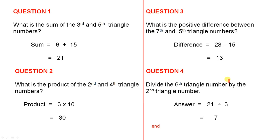Divide the sixth triangle number by the second triangle number. So that's 21 divided by 3, and that gives you 7.